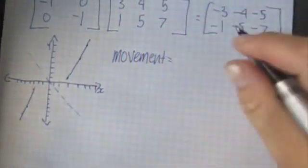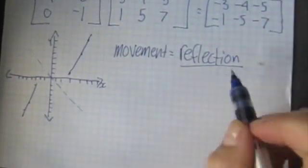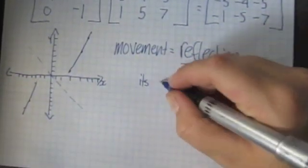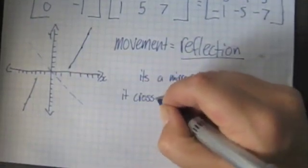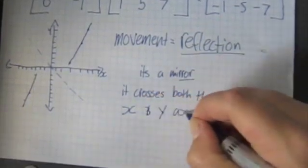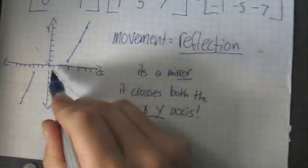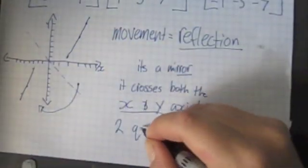It's called reflection. It reflects the original matrix points, and this is what it gives. It's an opposite mirror. As you can see here, it crosses both the x and y axis, so the x and then the y. And then it also moves two quadrants.